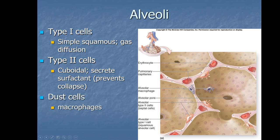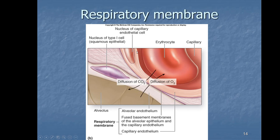There are also cells called dust cells, which are essentially macrophages in the alveoli. Looking even closer at the respiratory membrane — the alveolar-capillary interface — we can see where gas exchange actually occurs. Oxygen moves from the alveoli into the blood, while carbon dioxide, a waste product of metabolism, moves from the blood back into the alveoli to be exhaled. The respiratory membrane has three layers: the simple squamous endothelium of the alveoli, the simple squamous endothelium of the pulmonary capillary, and their fused basement membranes.